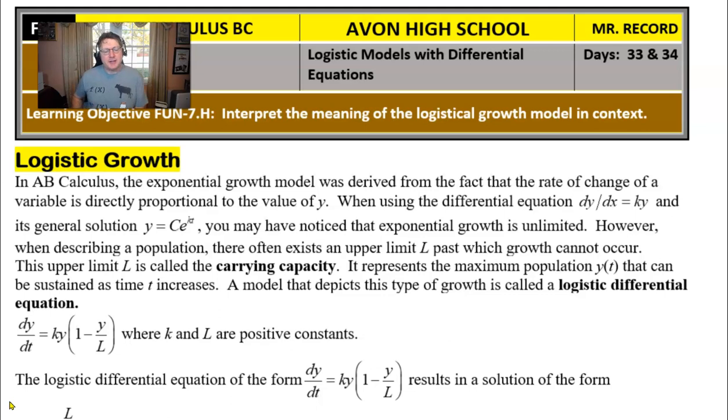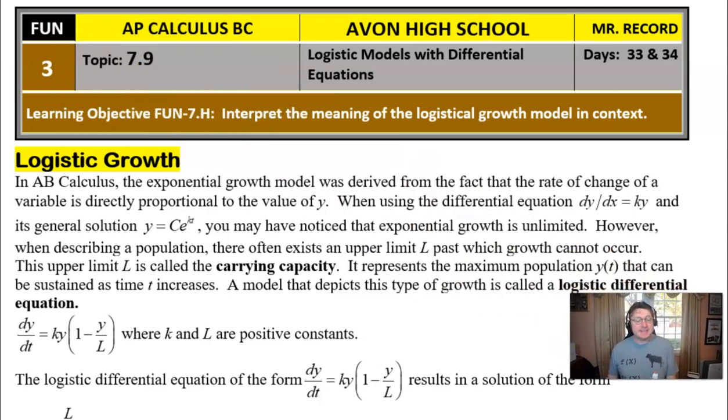So to get things started, we're going to take a look here at my notes. It's kind of a lot of words, a lot of information here, but let's read this together. In AB Calculus, the exponential growth model was derived from the fact that the rate of change of a variable is directly proportional to the value of y. That means you typically saw a differential equation like dy/dx = ky, and it turned out to have a solution y = ce^(kt), we call that kecht in my classroom.